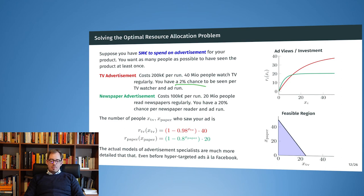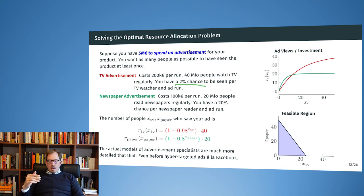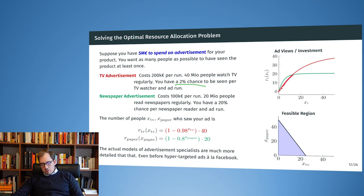On the first run, 2% of 40 million people see the ad. On subsequent runs, those who already saw it are excluded, so only 98% of 40 million times 2% can see it for the first time — this gives diminishing returns. The red curve shows how many people have seen the ad as a function of x_TV, the number of TV ad runs.